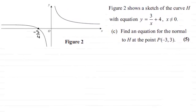Hi. Now, in this next part, we're asked to find an equation for the normal to the curve H at the point P with coordinates minus 3, 3. So as usual, if you'd like to have a go at this and haven't done so already, I'll just give you a moment to pause the video.